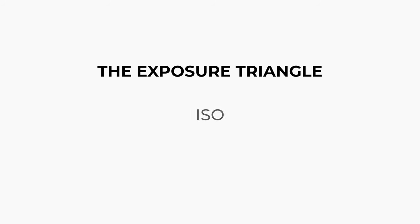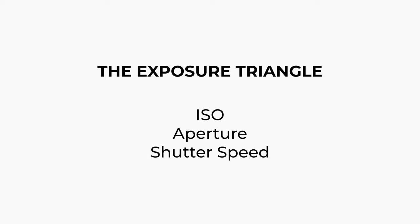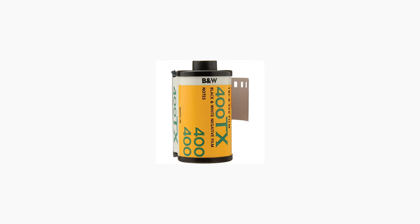ISO refers to the sensitivity of your camera's sensor to light. It's one of the three elements that determine the exposure of an image or video, along with aperture and shutter speed. Originally, ISO referred to the sensitivity of a film stock, but in the digital age, the ISO value is a representation of your camera sensor's sensitivity to light.